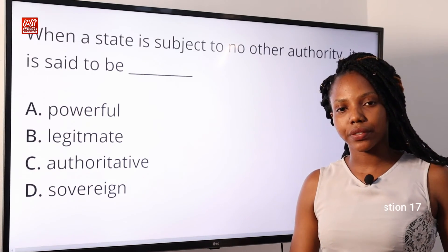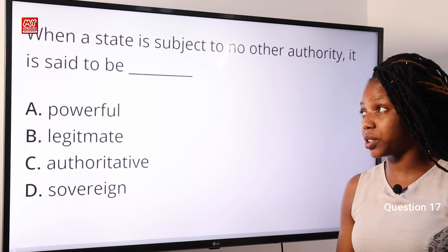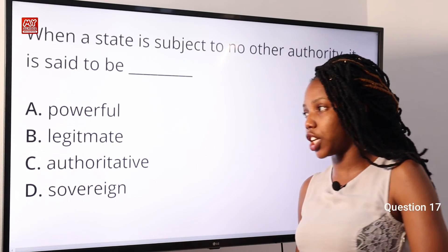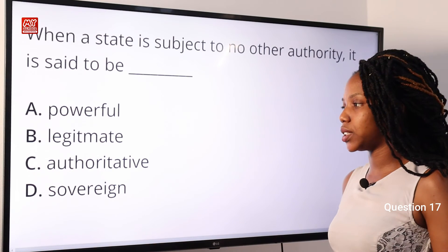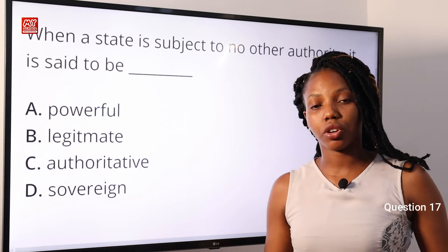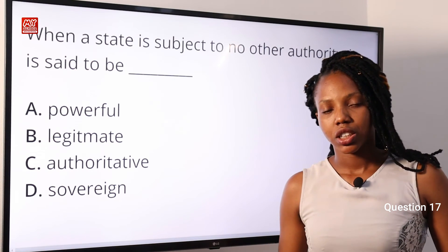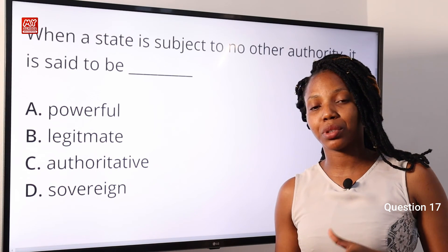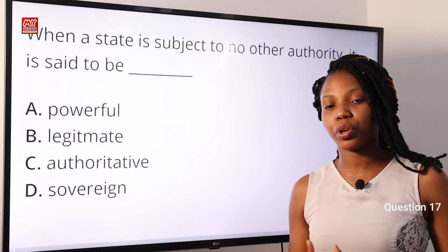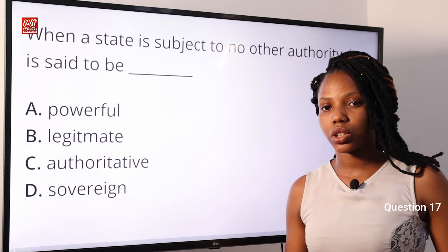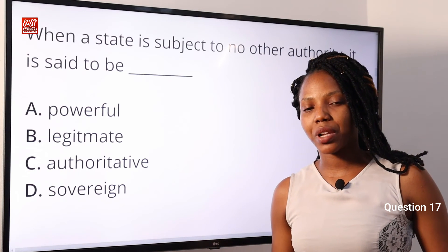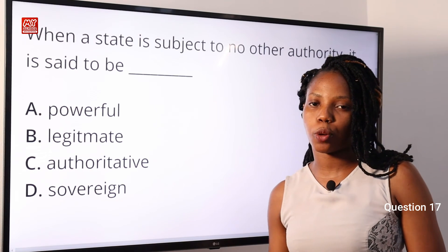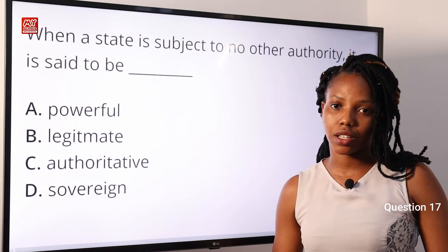Question 17: When a state is subject to no other authority, it is said to be — A: powerful; B: legitimate; C: authoritative; D: sovereign. The answer is D. Sovereignty means the supreme power and authority of a state, implying freedom from external interference. Option D is the correct answer.